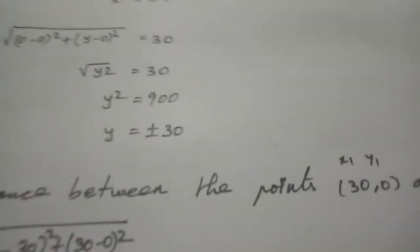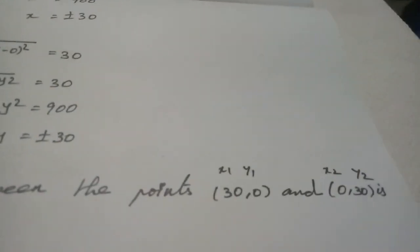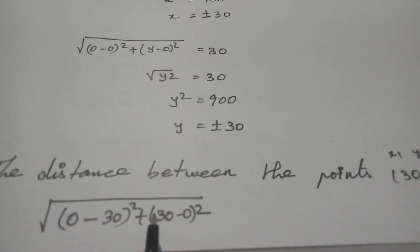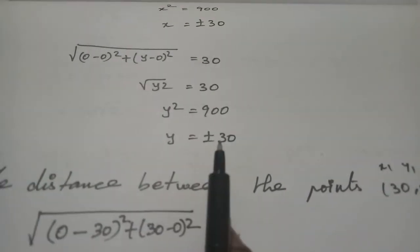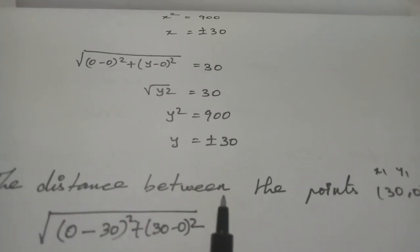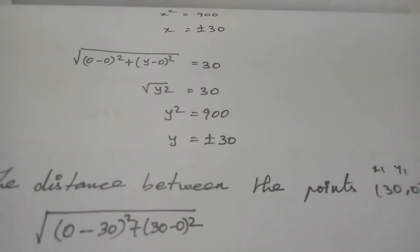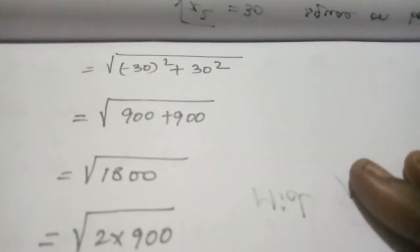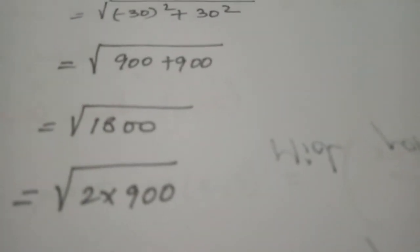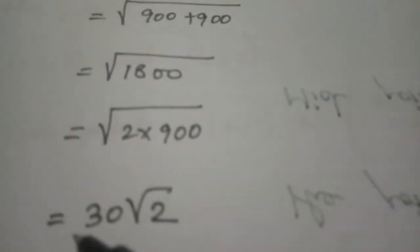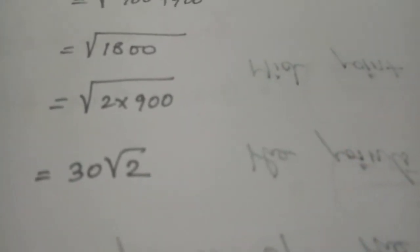The distance between the two points (30, 0) and (0, 30) is: √[(0-30)² + (30-0)²] = √[900 + 900] = √1800 = 30√2. Therefore the distance between the two intersection points is 30√2 units.